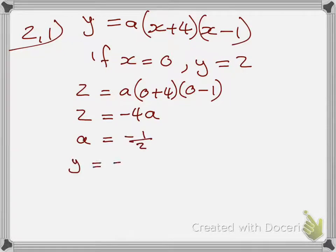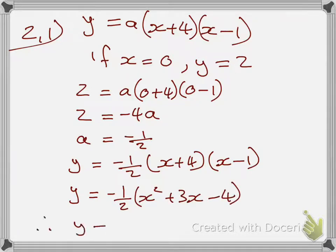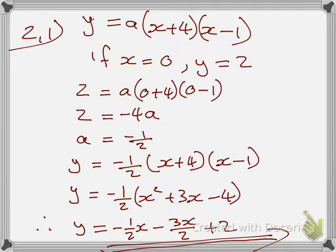Solve for a: your a will be equals to negative half. Then go back to your first expression, substitute where there's a with negative half, and simplify the brackets. It becomes negative half multiplied by x squared plus 3x, giving you negative half x squared minus 3x over 2 plus 2. That's how you write that equation in standard format.